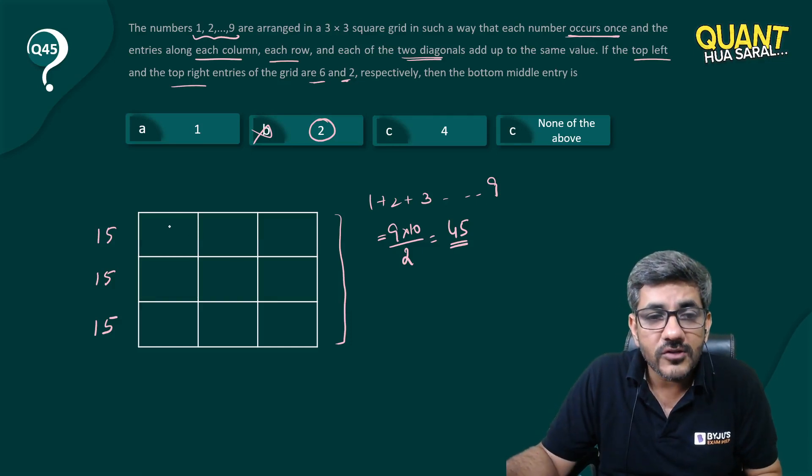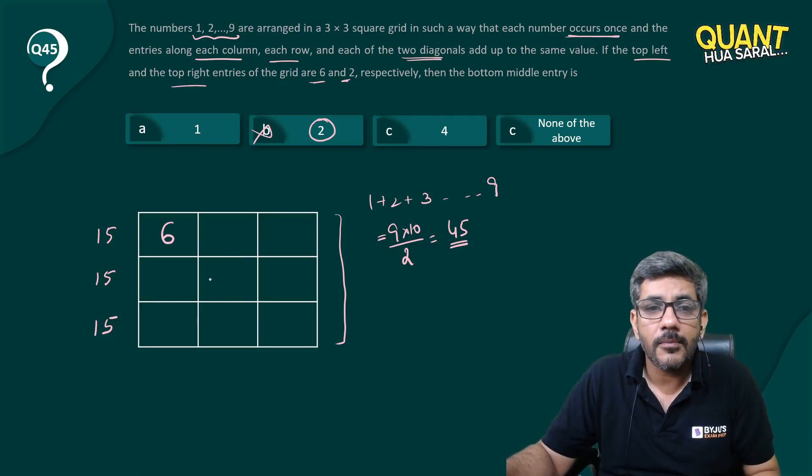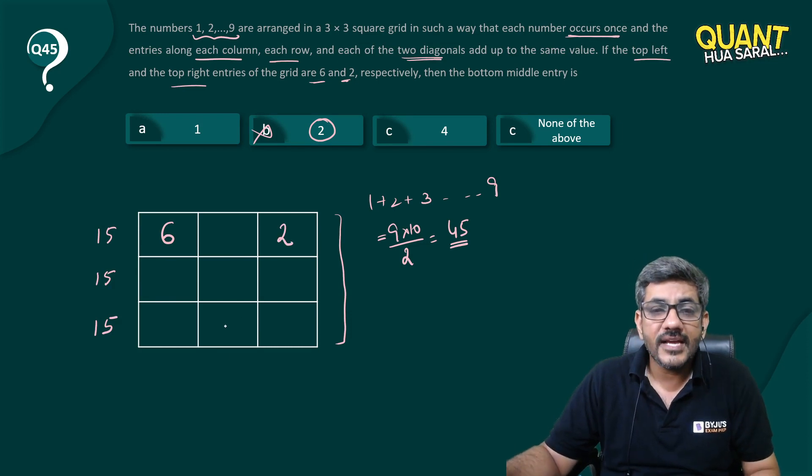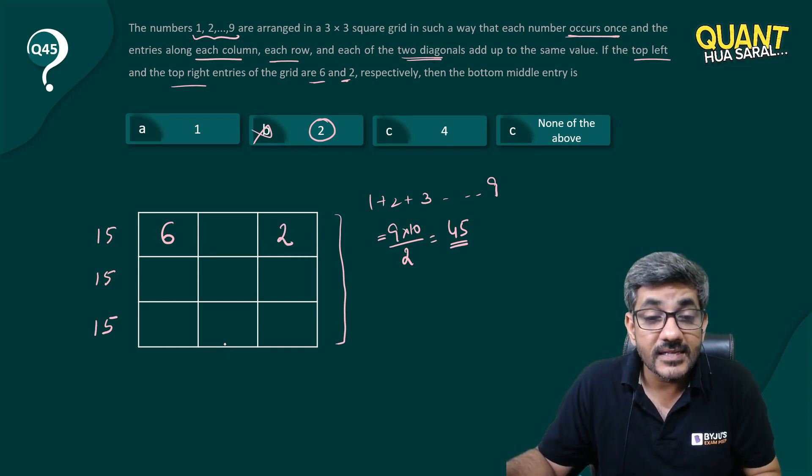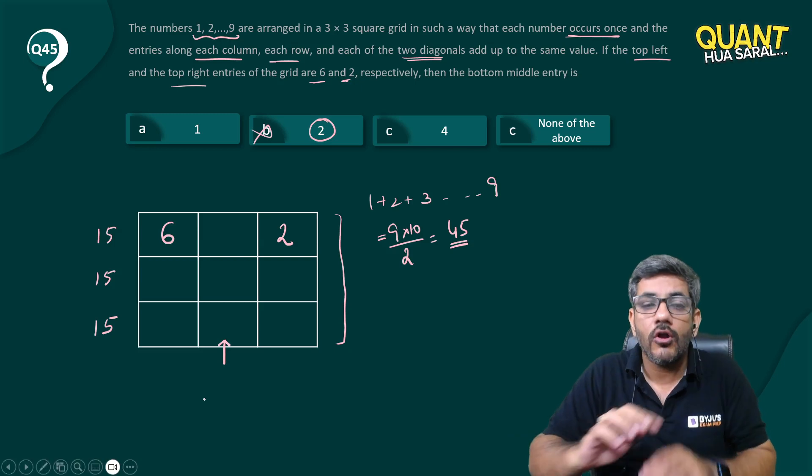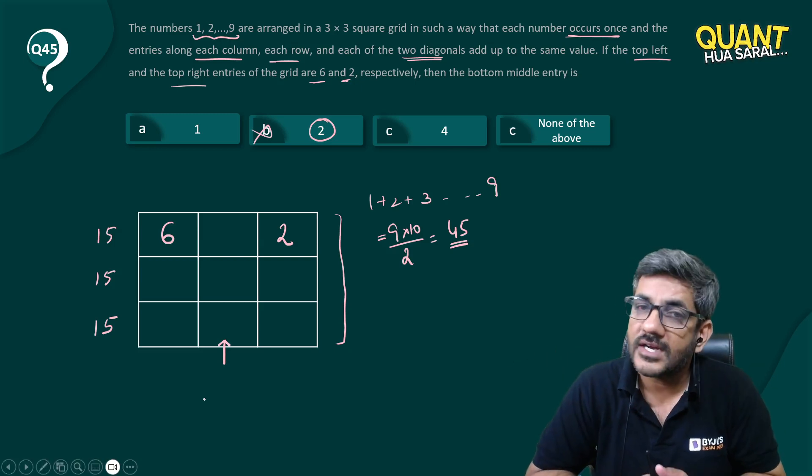Then he says top left corner is 6. So this value is 6. Top right corner is 2. So this value is 2. What can be the bottom middle entry? That means he is asking about this. We have already ruled out 2. We are left with 1 and 4. Let us try them 1 by 1.